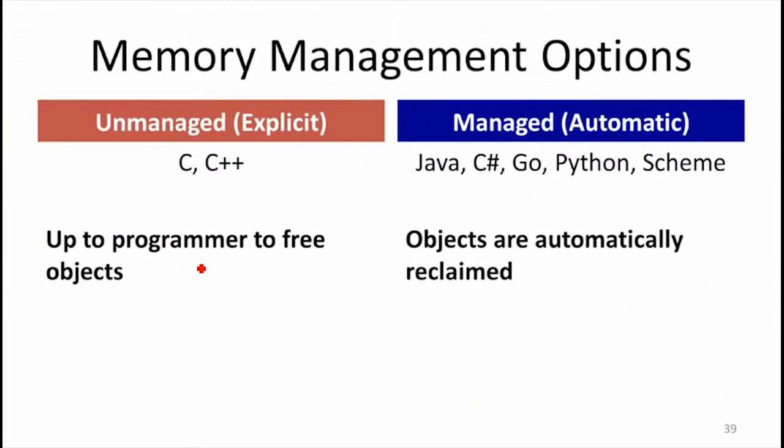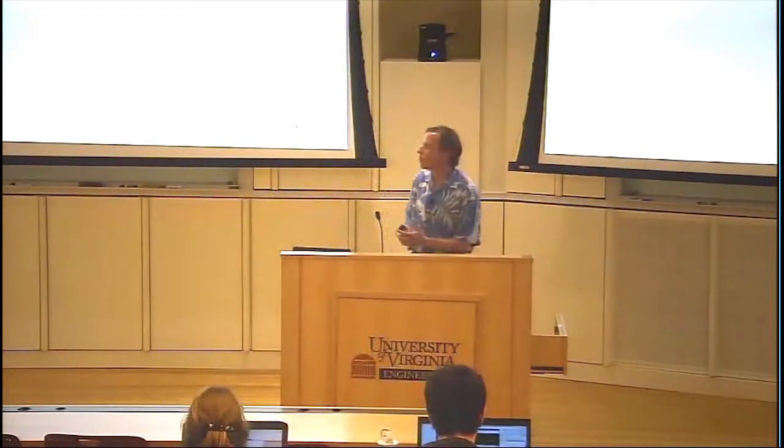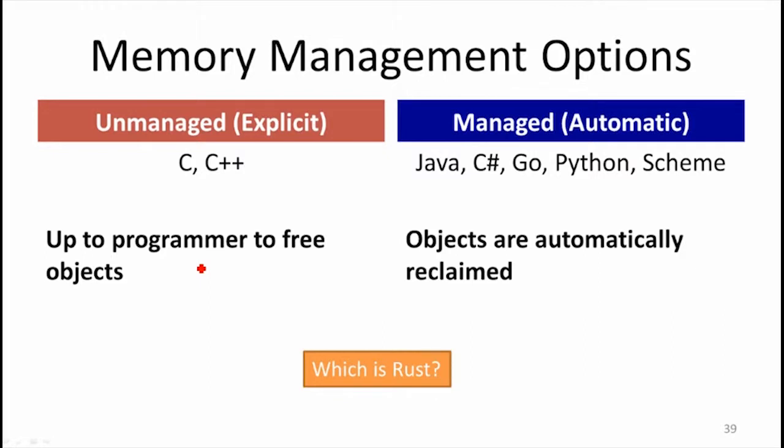Let's get back to our two options. So we said we have these two kinds of memory management. We have unmanaged explicit, like C and C++, where it's up to the programmer to explicitly deallocate objects using free. And we have managed where objects are automatically reclaimed by a reference counter or a garbage collector. What is Rust? So it really doesn't fit into either of these the way they're traditionally defined. It's either giving you the best of both or the worst of both, depending on your perspective. It is not requiring explicit free. And it's not doing this at runtime. It is giving you automatically reclaiming storage because the compiler is producing code that reclaims storage when it needs to.